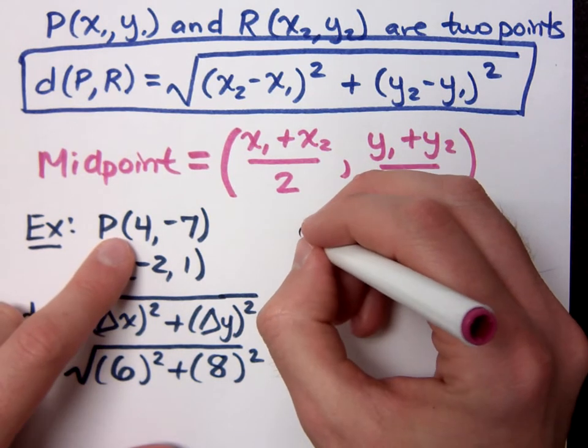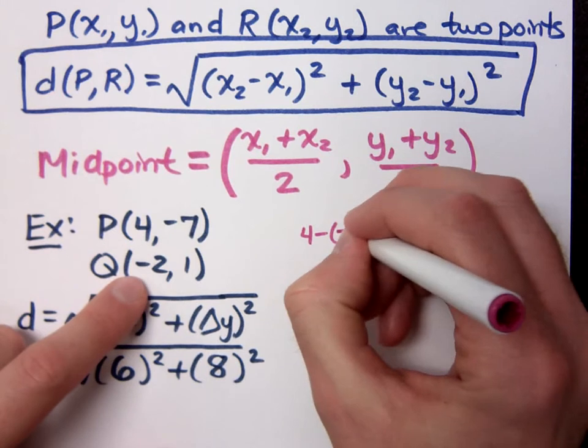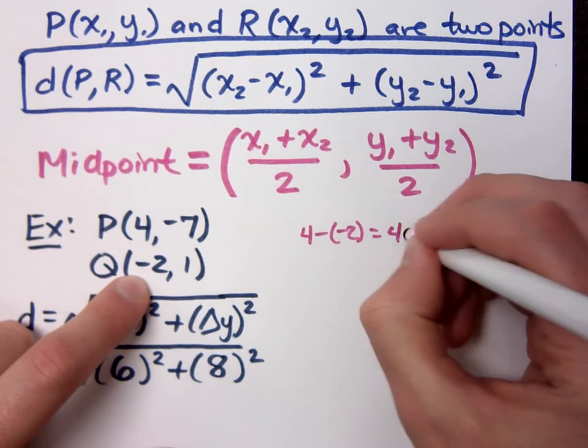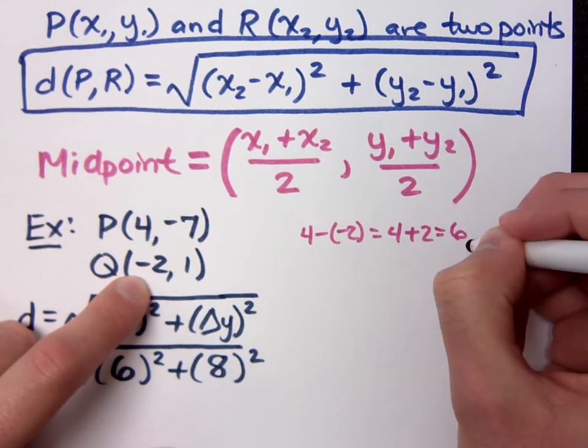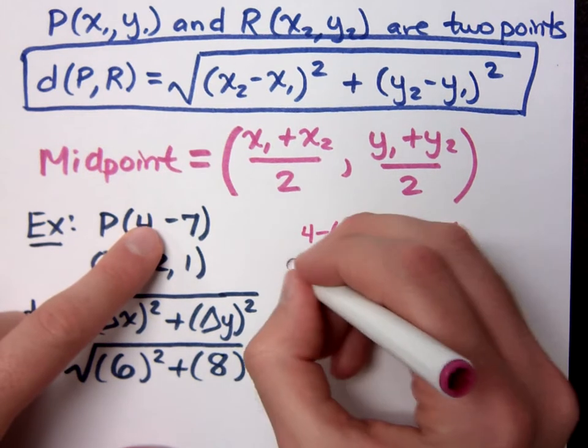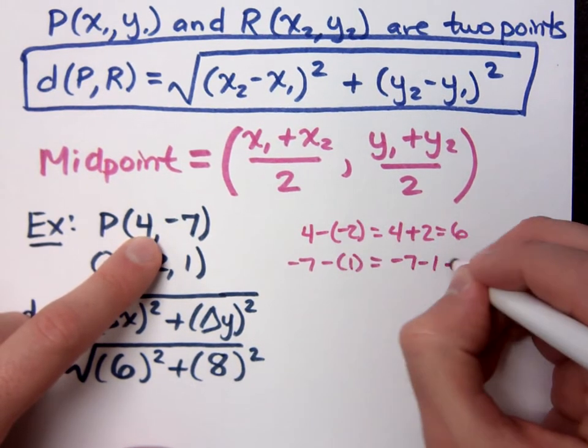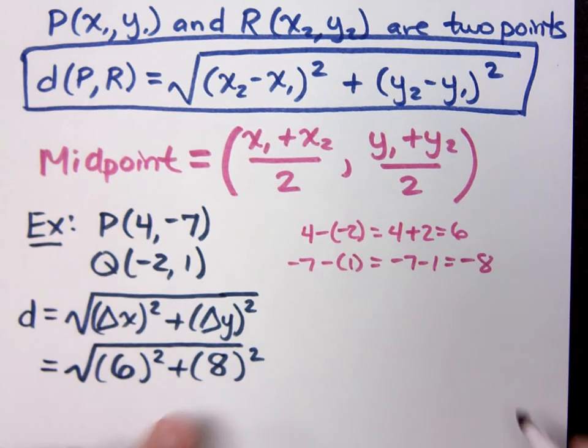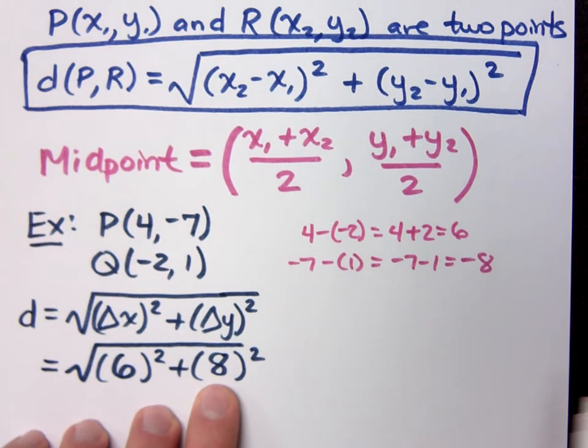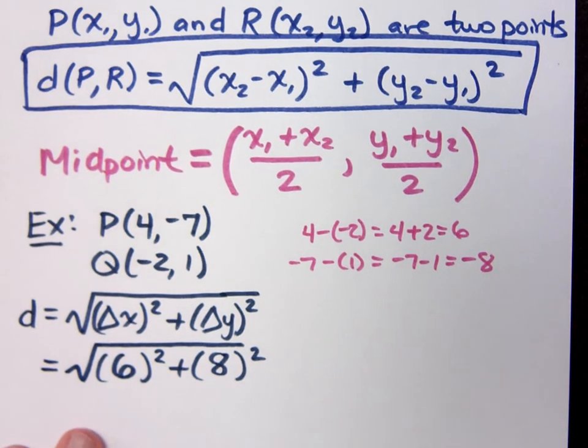What's the difference between this? If I do 4 minus negative 2, that's 4 plus 2, which equals 6. Here, if I go negative 7 minus 1, negative 7 minus 1 equals negative 8. Now, why did I put a positive 8 here? Shouldn't that be negative? It's going to be squared, so it doesn't matter. So let's finish this guy.